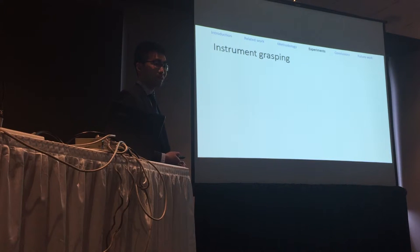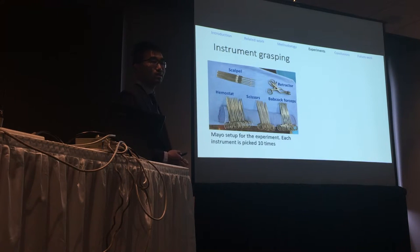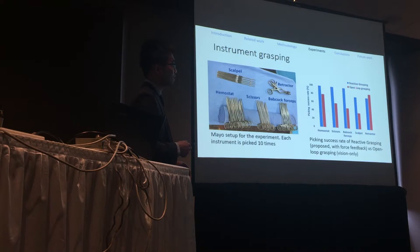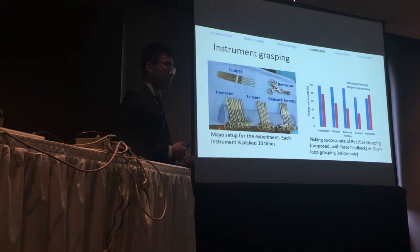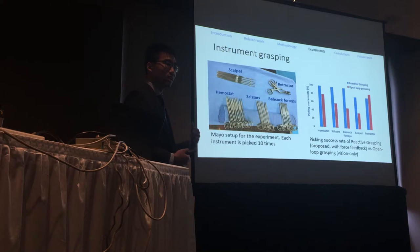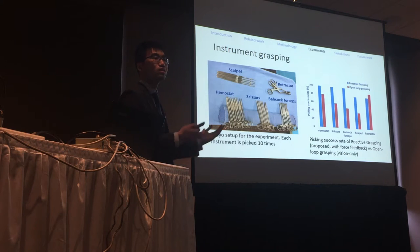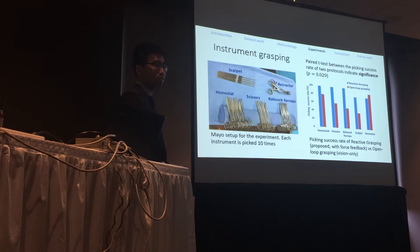For the grasping experiments, we have five different sets of instruments on the mayo stand and the robot is required to grasp each one 10 times. We compare open-loop grasping (using only the image processing pipeline's grasping point) versus our reactive closed-loop feedback control. The y-axis is success rate — higher is better. Our reactive algorithm outperforms open-loop across the different instruments, which is expected given the feedback. A paired t-test between the success rates of the two algorithms confirms a statistically significant difference.